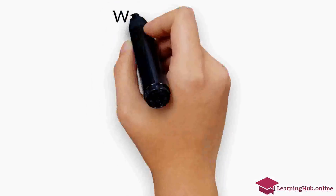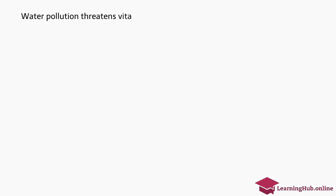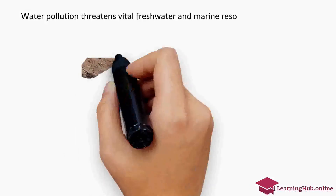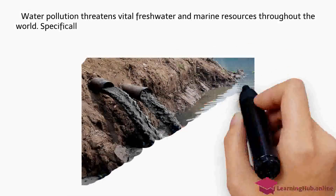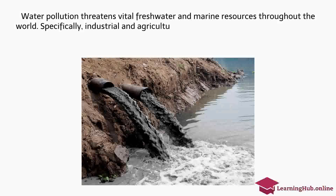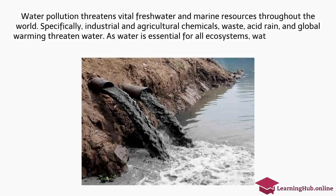Water Pollution. Water pollution threatens vital freshwater and marine resources throughout the world. Specifically, industrial and agricultural chemicals, waste, acid rain, and global warming threaten water. As water is essential for all ecosystems, water pollution can result in extinction.